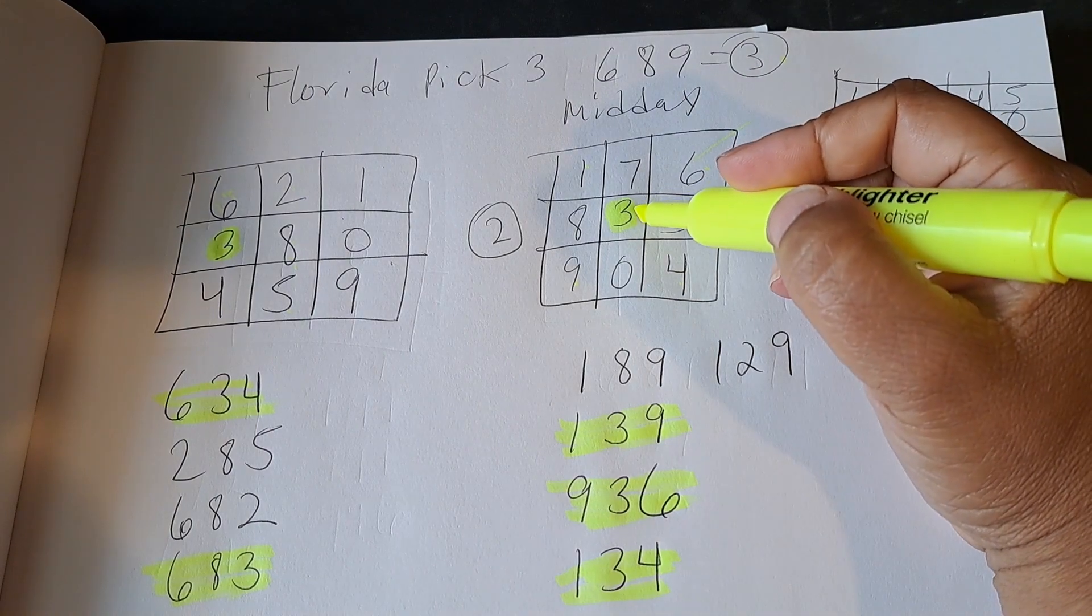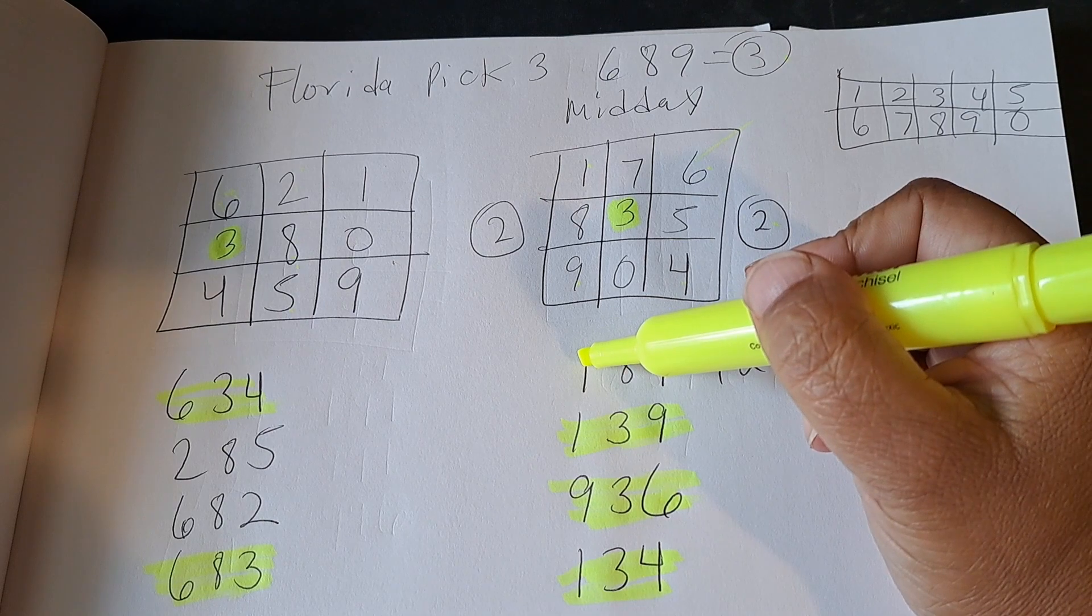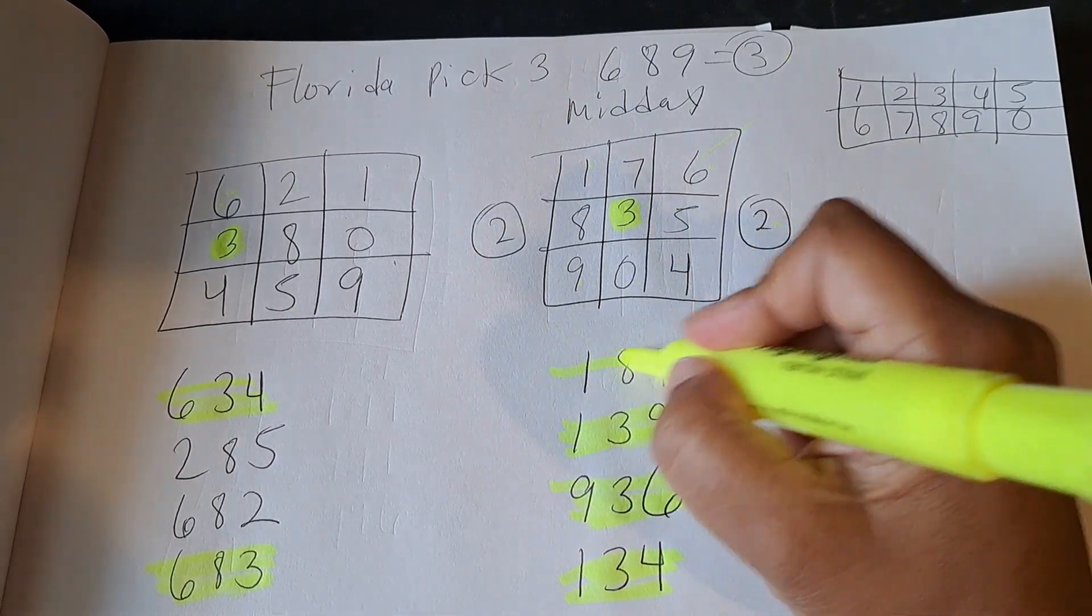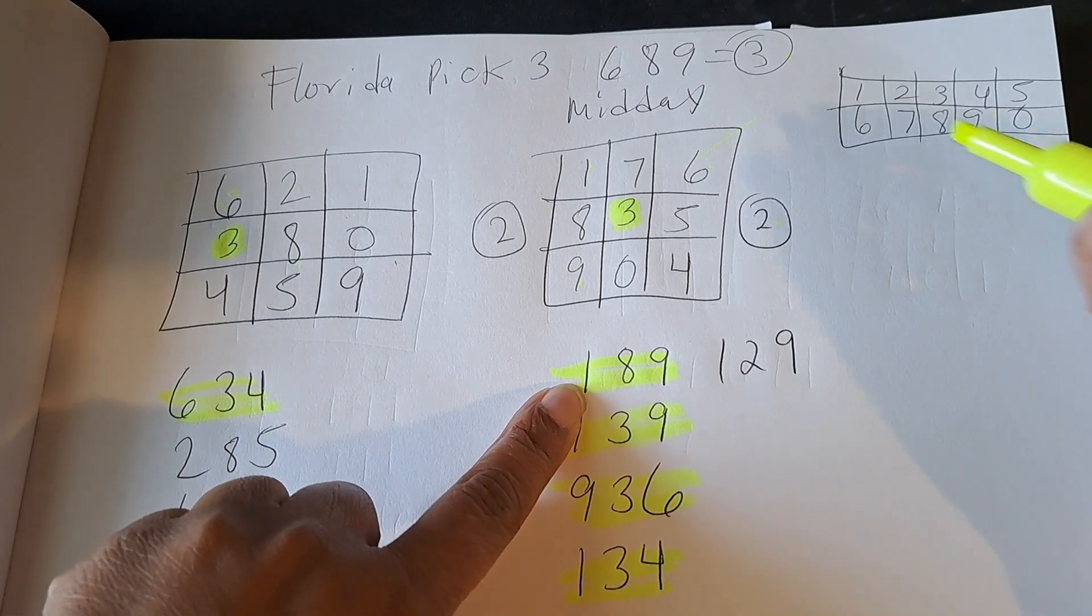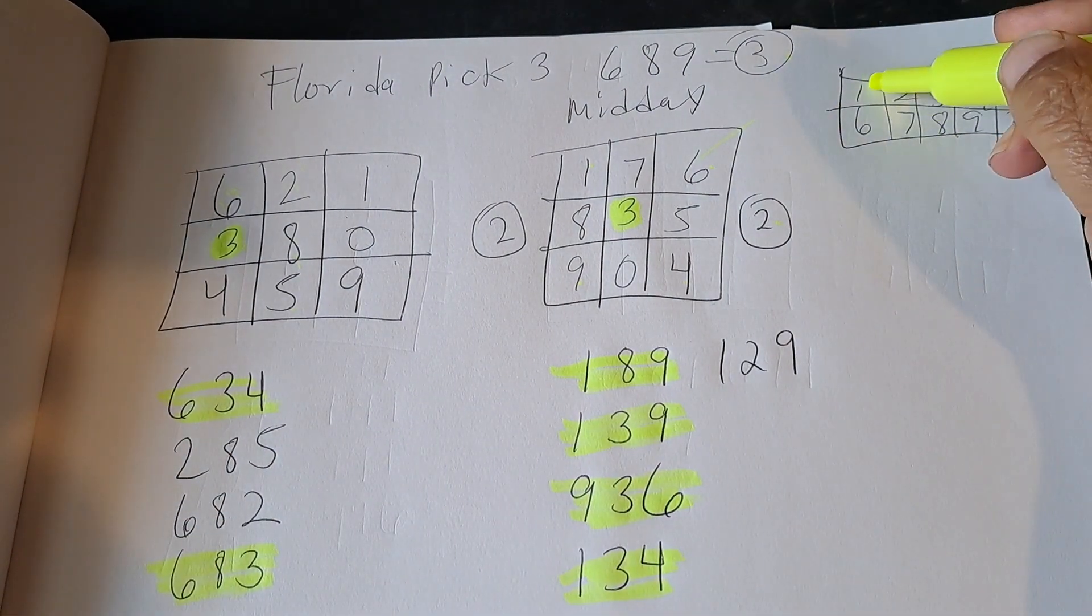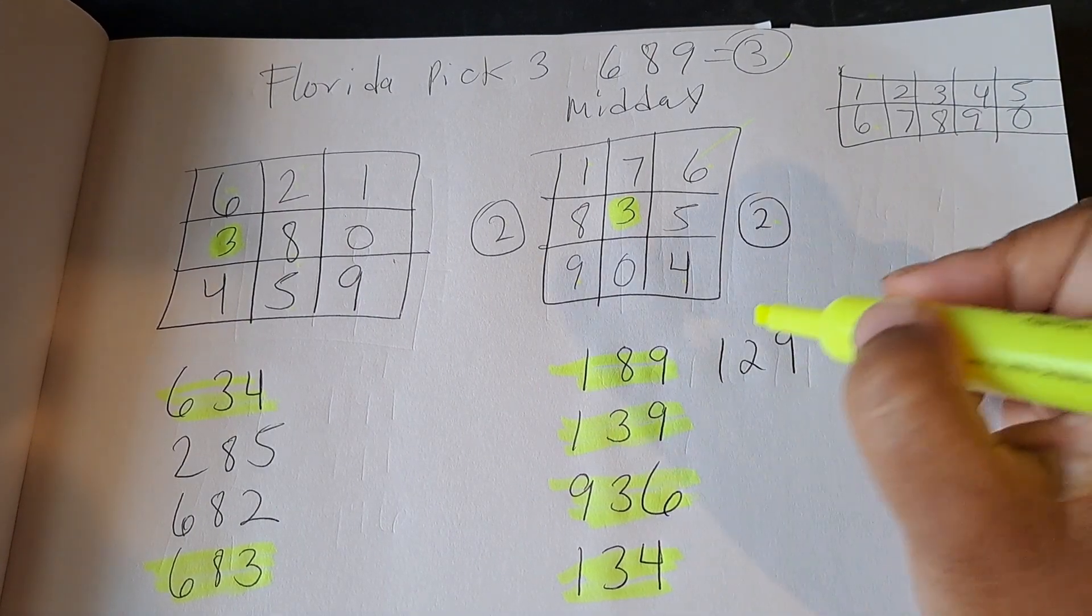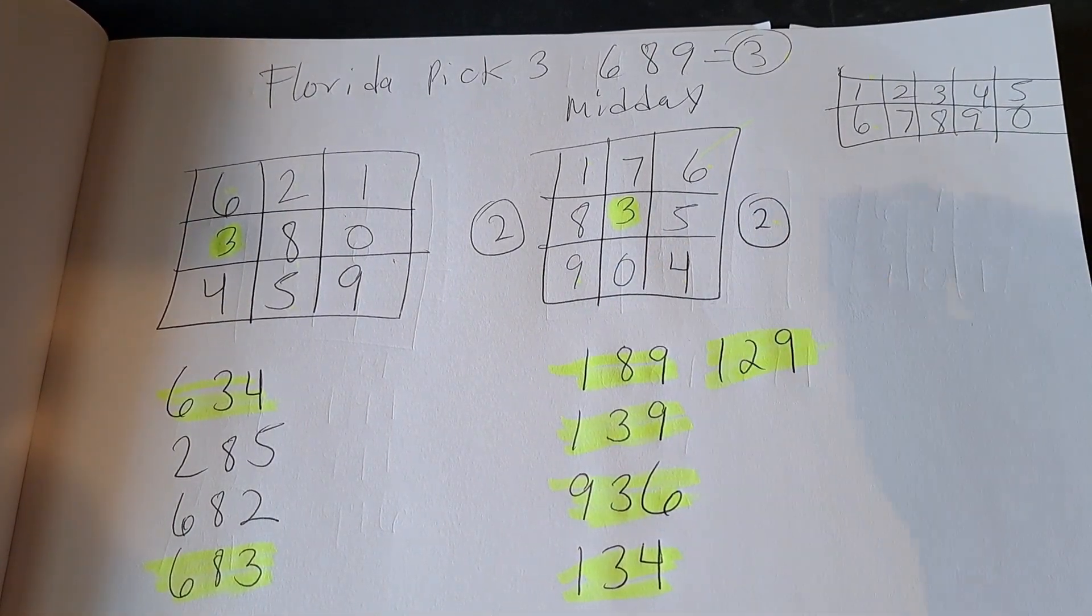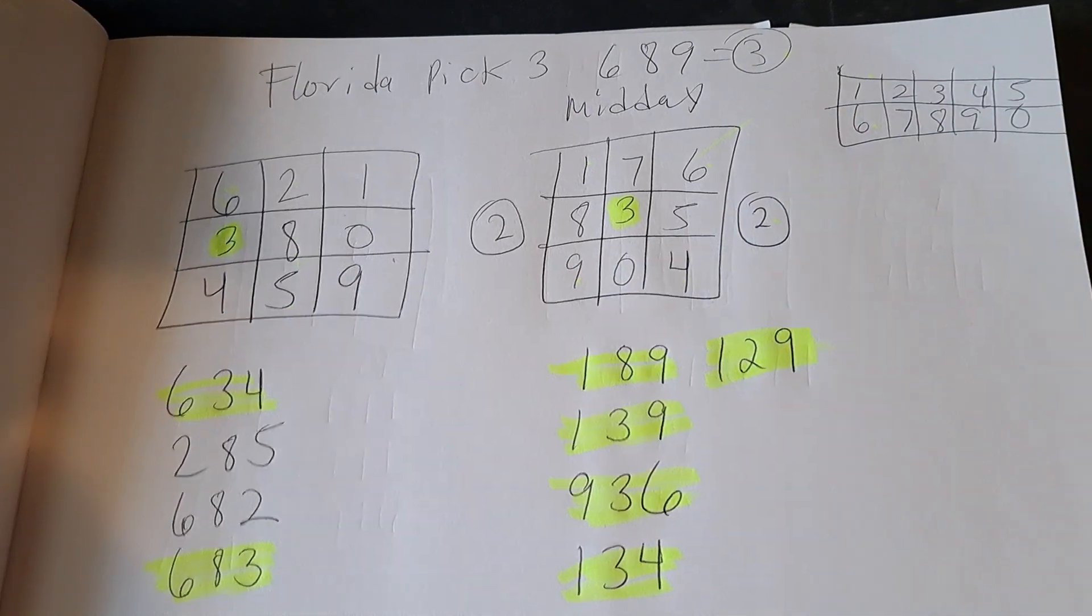It's like, just mirror the 8 to a 3. And over here, if you mirror this 1 to a 6, you get 189, 689. Mirror the 1 to the 6, you get 189. That's a good one. And I like 129. I just like the 129 to also follow the 149. And it has the 19 pair.